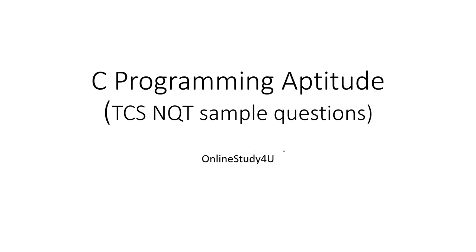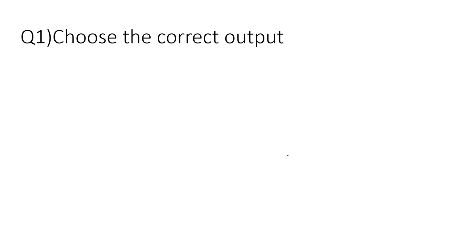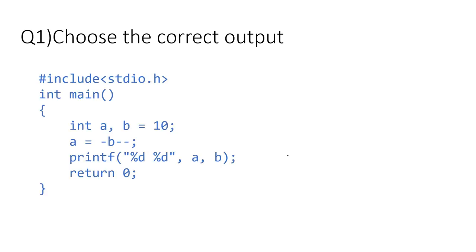Welcome to Online Study for You. This is a session on C programming aptitude which covers sample questions for the TCS MQT examination. So let's get started. The first question is: choose the correct output for the given program. So let us see the program and then analyze what is happening here.